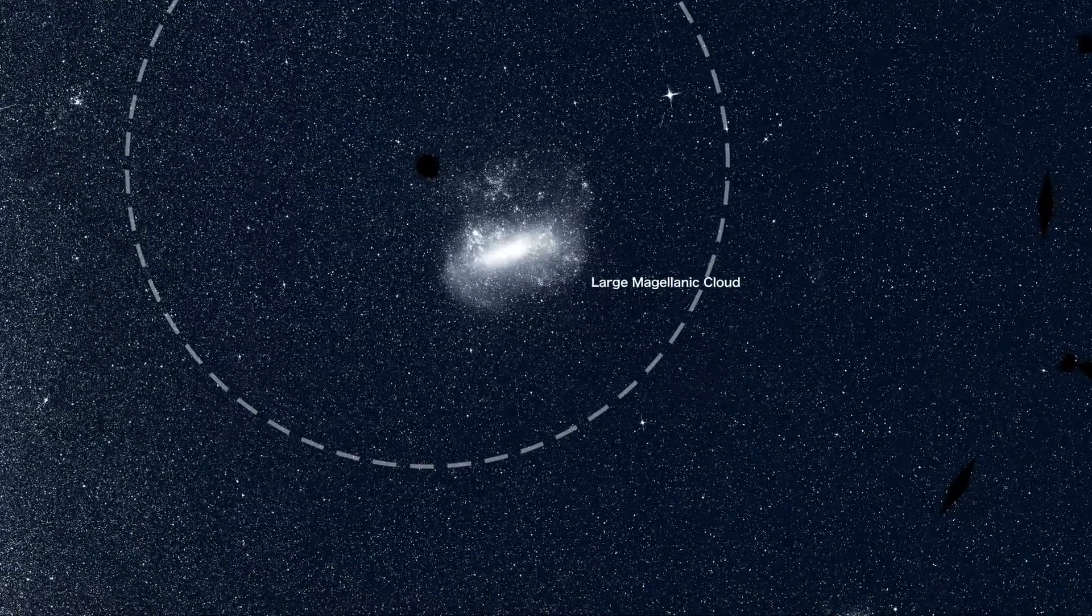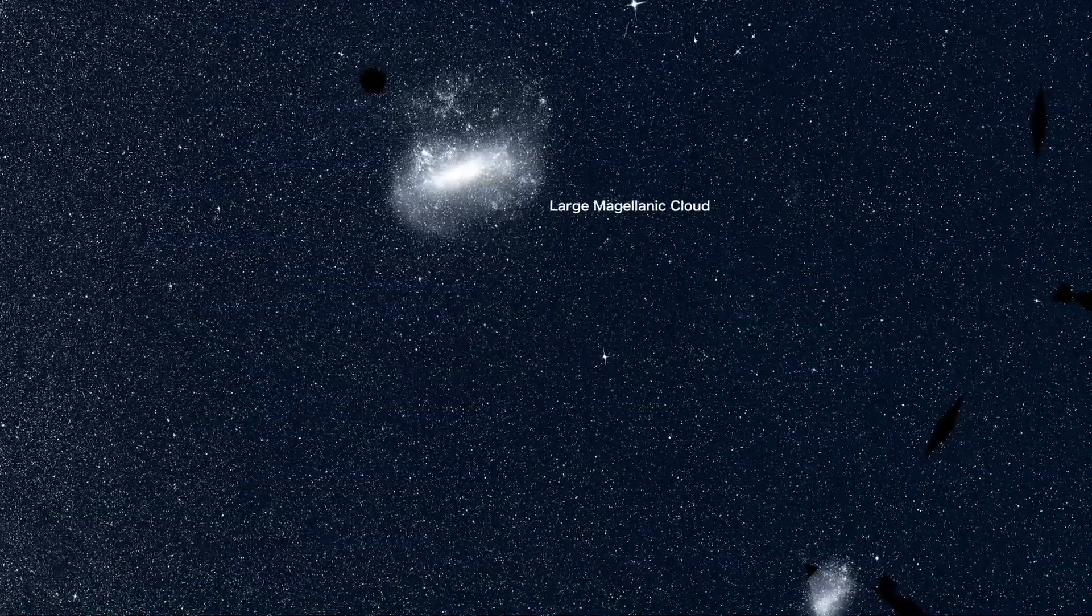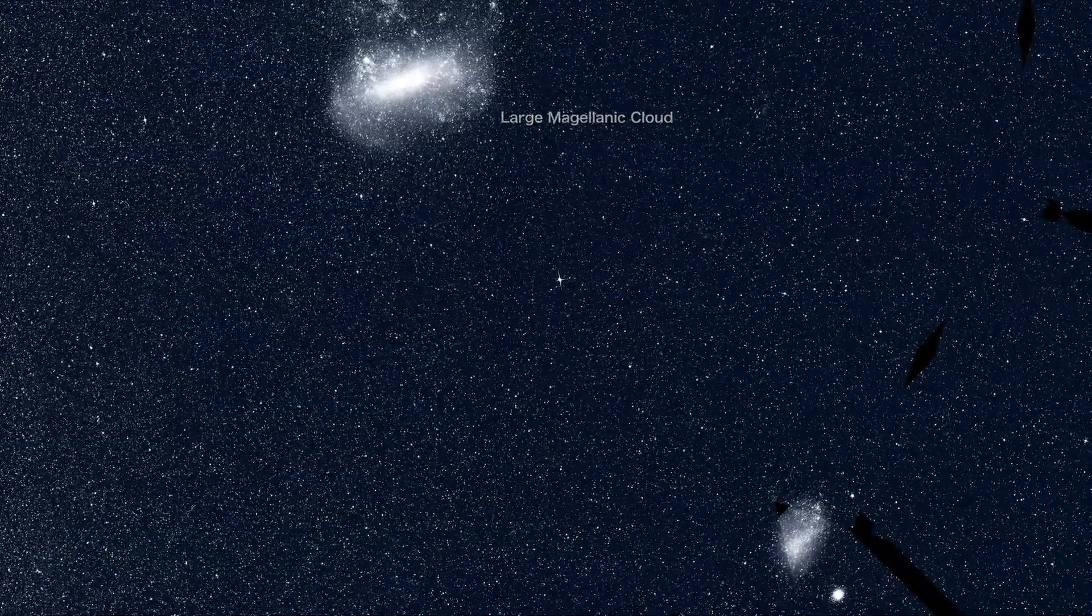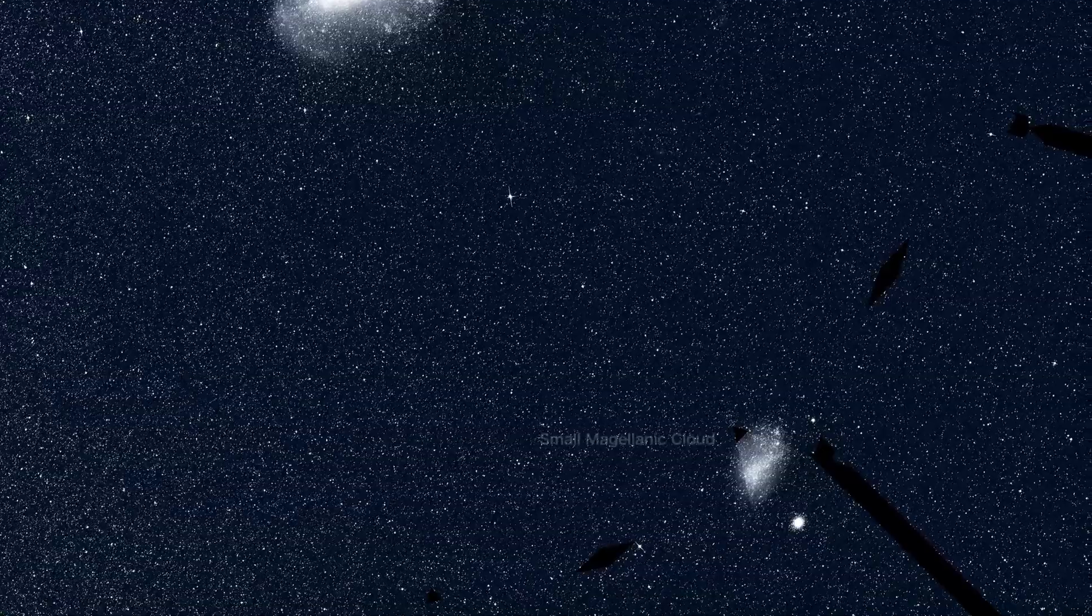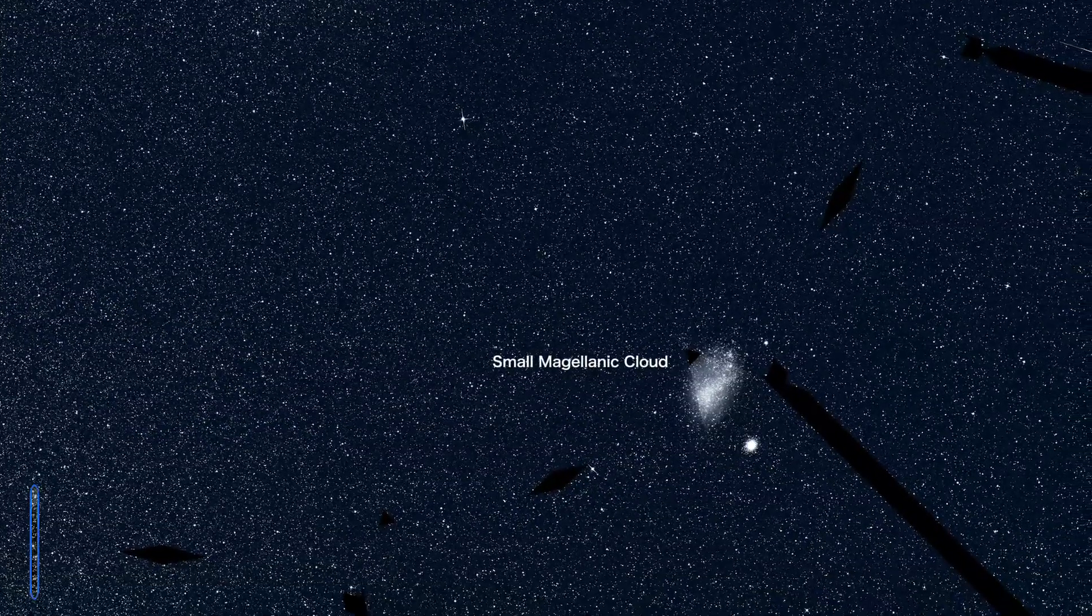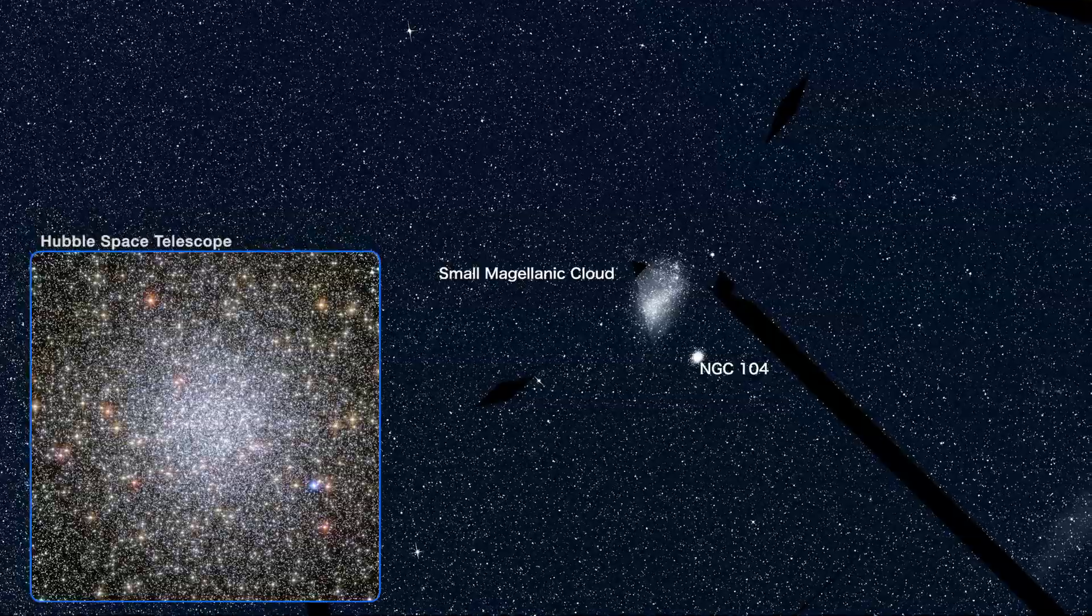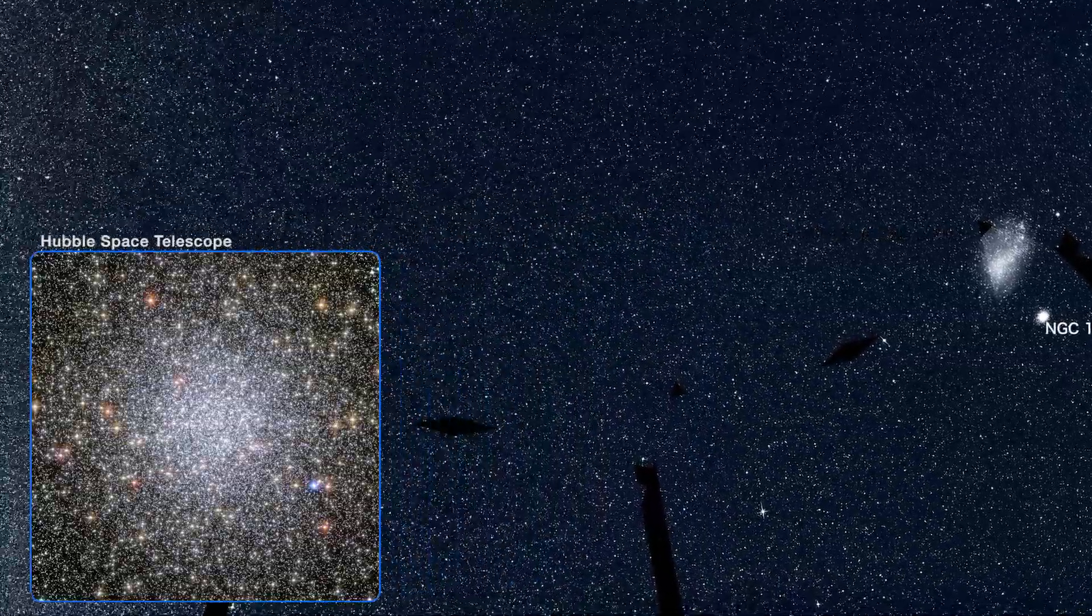Within it is the Large Magellanic Cloud, one of the closest galaxies to our own. A little farther out is the more distant Small Magellanic Cloud, which is flanked by a ball of stars, the bright globular cluster NGC 104.